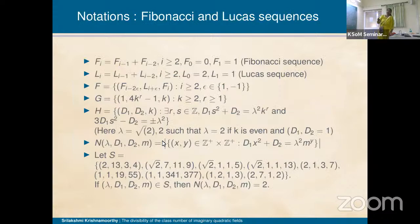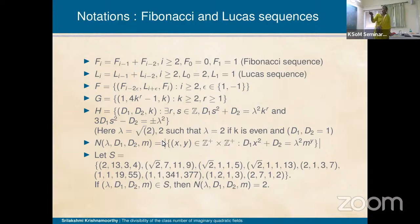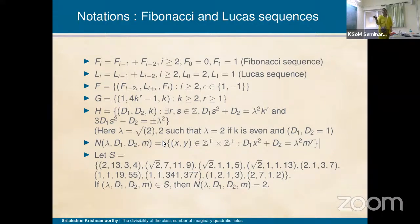Some notations used: the Fibonacci sequence F_n = F_{n−1} + F_{n−2}, and Lucas sequence with L_0 = 2, L_1 = 1, and L_n = L_{n−1} + L_{n−2}. F is a set defined in terms of L_n and the Fibonacci sequence. G is the set {(1, 4k^r − 1, k) : k ≥ 2, r ≥ 1}. H is the set of all solutions of two fixed Diophantine equations: D1·s² − D2 = λ²·k^r and 3D1·s² − D2 = ±λ².